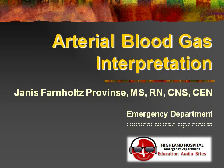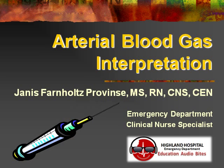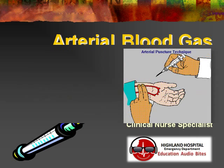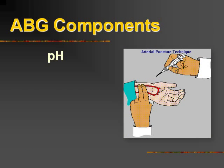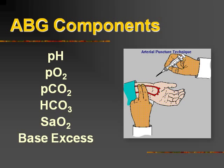Hi, I'm Janice Feinholz-Province, and this is a quick little tutorial on how to interpret the ABG. There are several components of the ABG: the pH, the PO2, the PCO2, the bicarb and the SAO2, as well as the base excess.